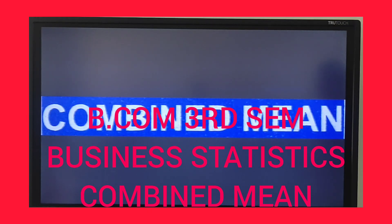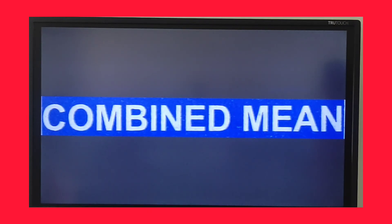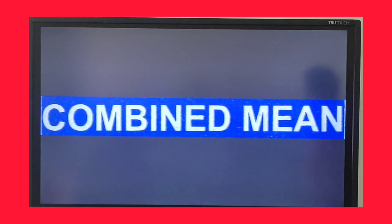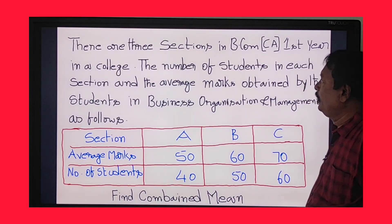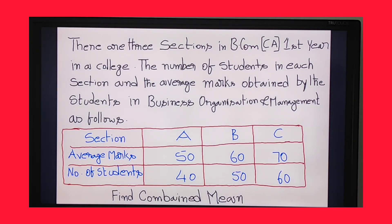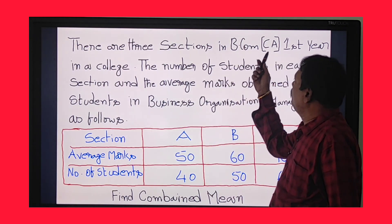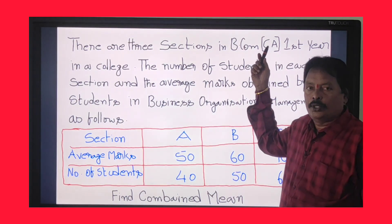This topic is important for exams. There are three sections in B.com C.A. first year in a college. The number of students in each section and the average marks obtained by the students in Business Organization and Management are as follows.